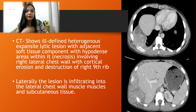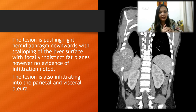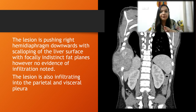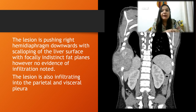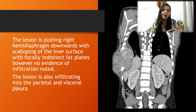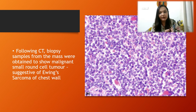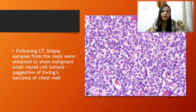On the coronal section, the lesion was large enough to cause cortical destruction of the ninth rib and also caused downward shift of the right hemidiaphragm with scalloping of the liver surface, though no infiltration of the liver was noted. The lesion was also infiltrating into the parietal and visceral pleura. A 3D CT reconstruction was used to identify which ribs were involved. Biopsy confirmed a malignant small round cell tumour, confirming the diagnosis of Ewing Sarcoma of the chest wall.